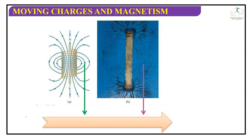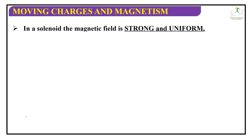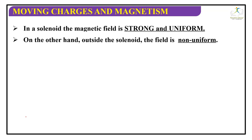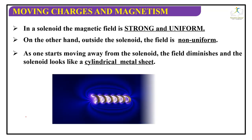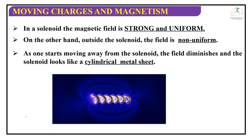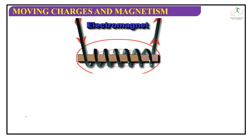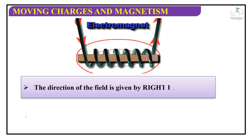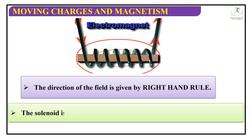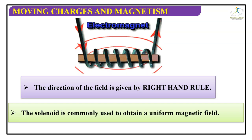As you can see in the diagram, the direction of magnetic field lines is shown both experimentally and theoretically. The magnetic field lines of a finite solenoid show that inside the solenoid the magnetic field is strong and uniform, while outside the solenoid the field is non-uniform. As one moves away from the solenoid, the field diminishes, and the solenoid looks like a cylindrical metal sheet. The direction of the field is given by the right-hand rule, and the solenoid is commonly used to obtain a uniform magnetic field.